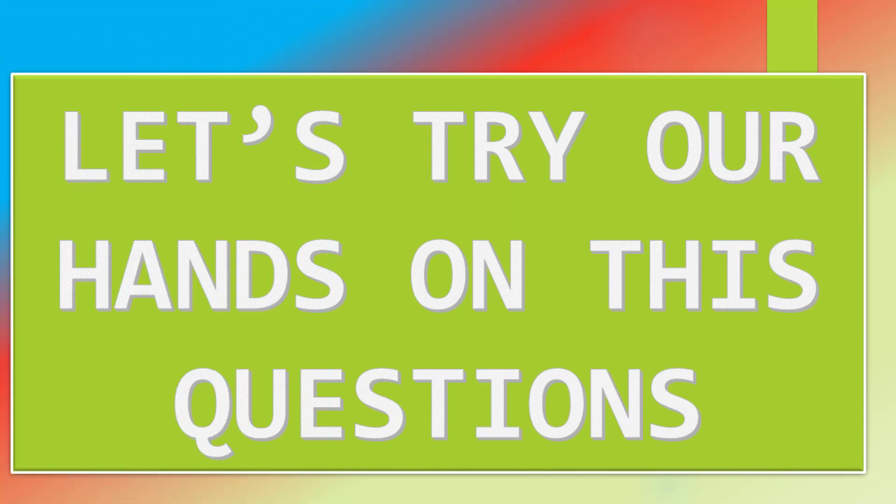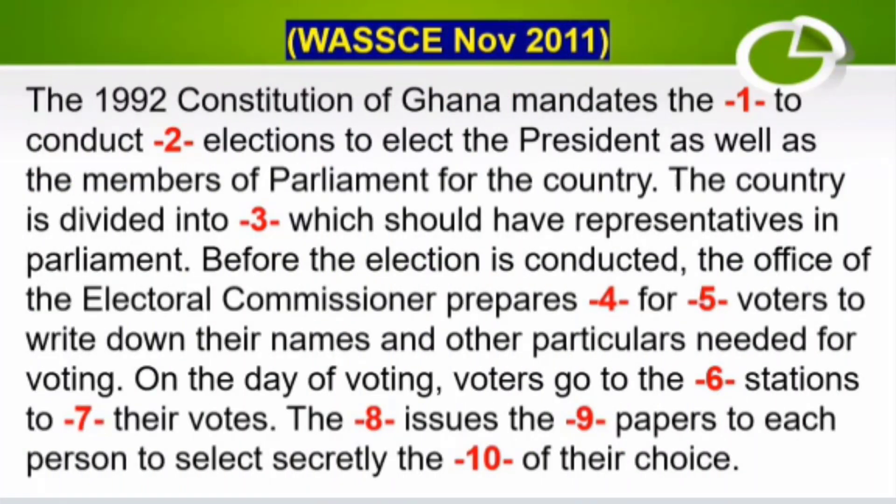Let's try our hands on this question and comment below on the scores you get. The 1992 Constitution of Ghana mandates a DASH to conduct DASH elections to elect the president as well as a member of parliament for the country. The country is divided into DASH which will have representatives in parliament. Before the election is conducted, the office of the Electoral Commissioner prepares DASH for DASH voters to write down their names and other particulars needed for voting. On the day of voting, voters go to the DASH stations to DASH their votes.